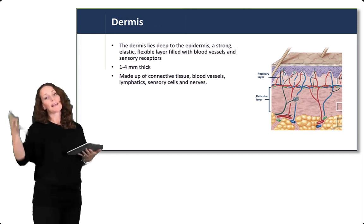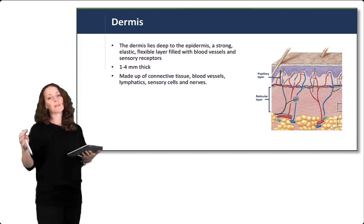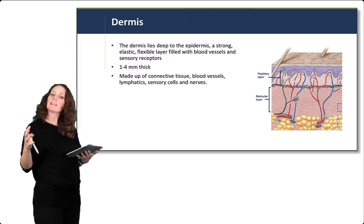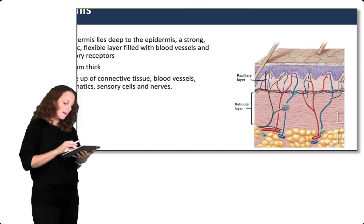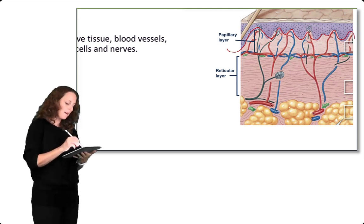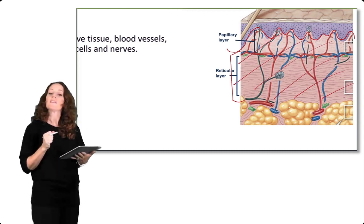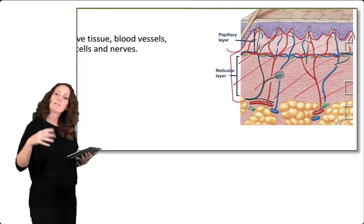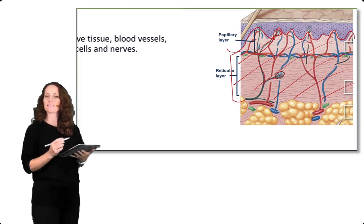The dermis lies deep to the epidermis. It is a strong, elastic, and flexible layer filled with blood vessels and sensory receptors, about one to four millimeters thick, made up of connective tissue, blood vessels, lymphatics, sensory cells, and nerves. Looking at the diagram underneath the wavy epidermis-dermis boundary, the entire region is the dermis. Within it you can see blood vessels diagrammed in red and blue, lymphatics in green, sensory cells, and nerve endings.